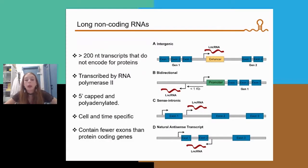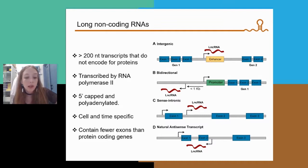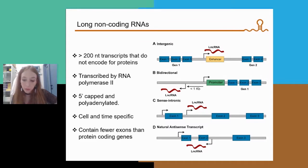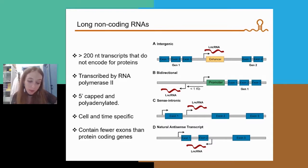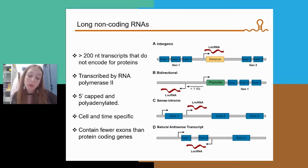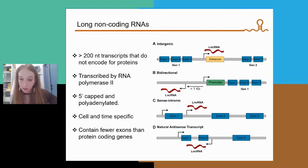Therefore, we need to determine genetic factors that could regulate the expression of Pax-6. Long non-coding RNAs are transcripts longer than 200 nucleotides that do not encode for proteins. They share many features with messenger RNAs — they are transcribed by RNA polymerase II and undergo the same post-transcriptional modifications — but they contain fewer exons and are normally expressed in a very cell- and time-specific manner.